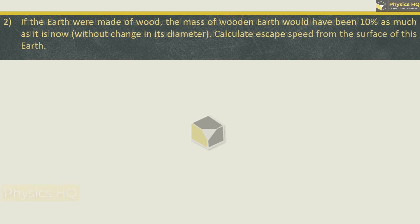Next sum we will see. If the Earth were made of wood, the mass of wooden Earth would be 10% of what it is now without change in its diameter. Calculate the escape velocity from the surface of this Earth. First of all, let's talk about escape velocity.